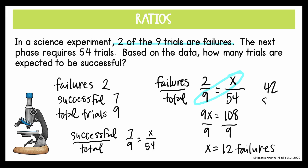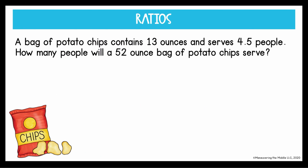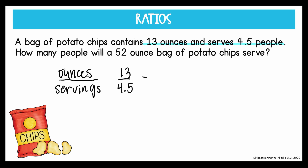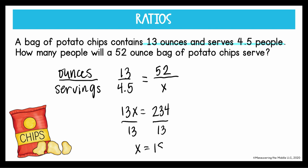A bag of potato chips contains 13 ounces and serves four and a half people. How many people will a 52 ounce bag of potato chips serve? We're comparing ounces to servings: 13 to four and a half. With 52 ounces and X servings, cross multiplying gives 13X equals 234. Dividing both sides by 13 gives X equals 18 servings. Don't let the decimal throw you off.